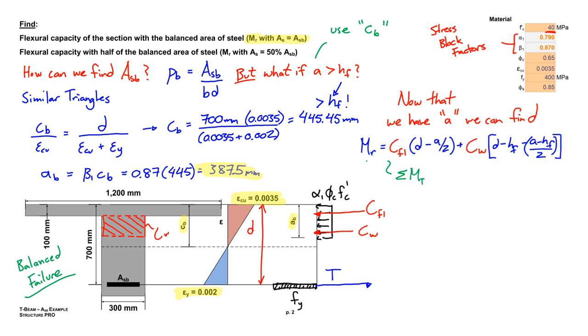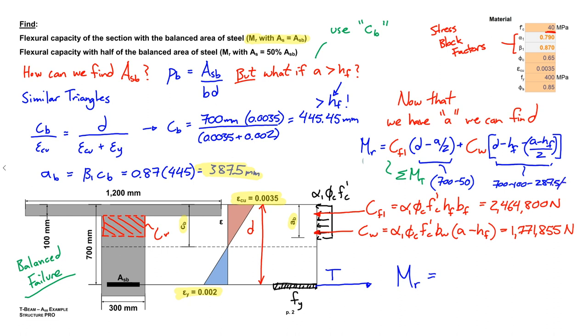Alright, so let's move this MR equation over. Now it's time to actually solve for CFL and CW. So that's alpha 1 phi C f prime C, and then it's just the length and height over which these results are acting. So for CFL it's HF times BF, and for CW it's the width of the web BW, and then A minus HF. It's a little tricky, look at it carefully. Alright, so we solve for these two values and we're going to keep everything in newtons, so it works out nicely: newtons, millimeters, MPa. Our final MR value that we get, well let's first just grab these moment arms. D minus A over 2, that's 700 minus 50, and then this other huge mess. We end up getting MR of 2410 kilonewton meters.